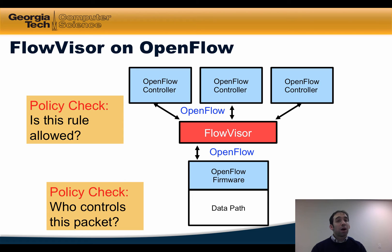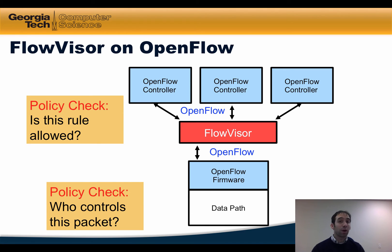FlowVisor performs different types of policy checks. For example, when a controller attempts to install a rule, it determines whether that controller is allowed to install that rule in the switch. It also determines which controller controls a particular packet, so that if a packet needs to be sent to the controller, it's sent to the right one.